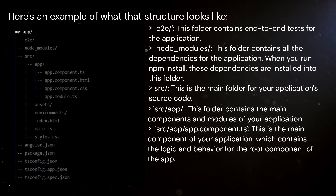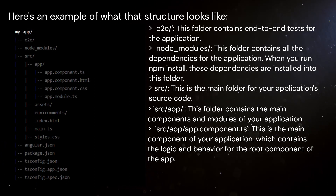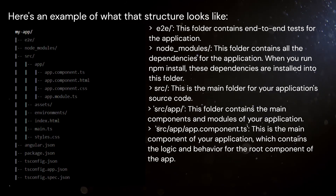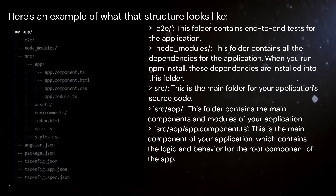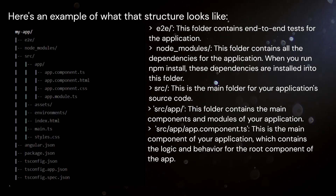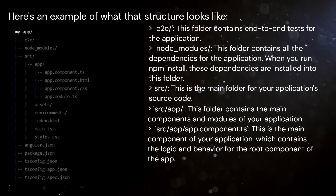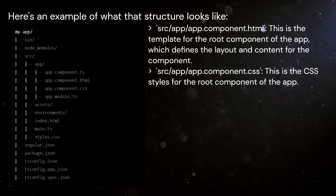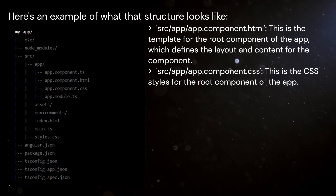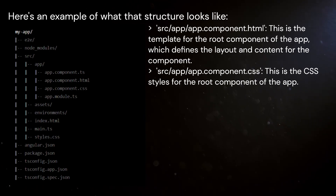SRC: This is the main folder for your application's source code. This folder contains the main components and modules of your application. SRC/App/app.component.ts: This is the main component of your application, which contains the logic and behavior for the root component of the app. SRC/App/app.component.html: This is the template for the root component of the app, which defines the layout and content for the component.